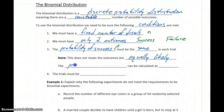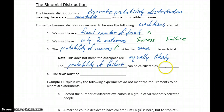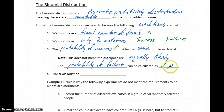We can also calculate the probability of failure as 1 minus P. This again comes back to the complement rule for probabilities. If the probability of success is 30%, then the probability of failure is 1 minus 30%, or 70%.